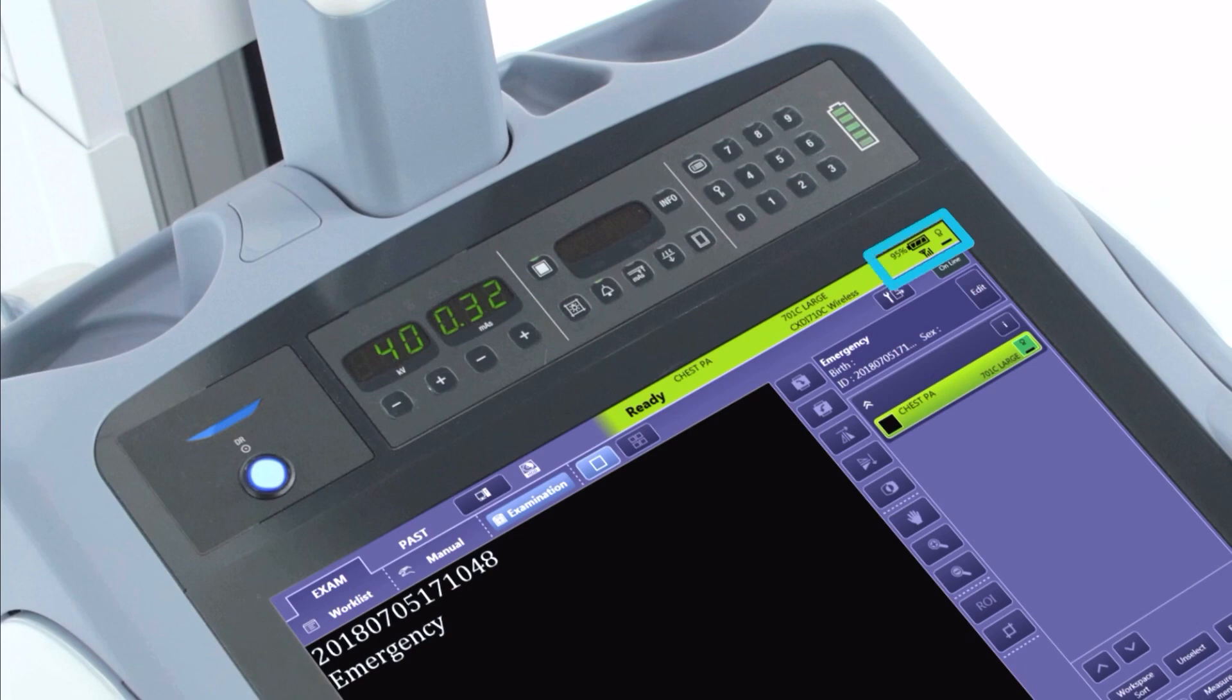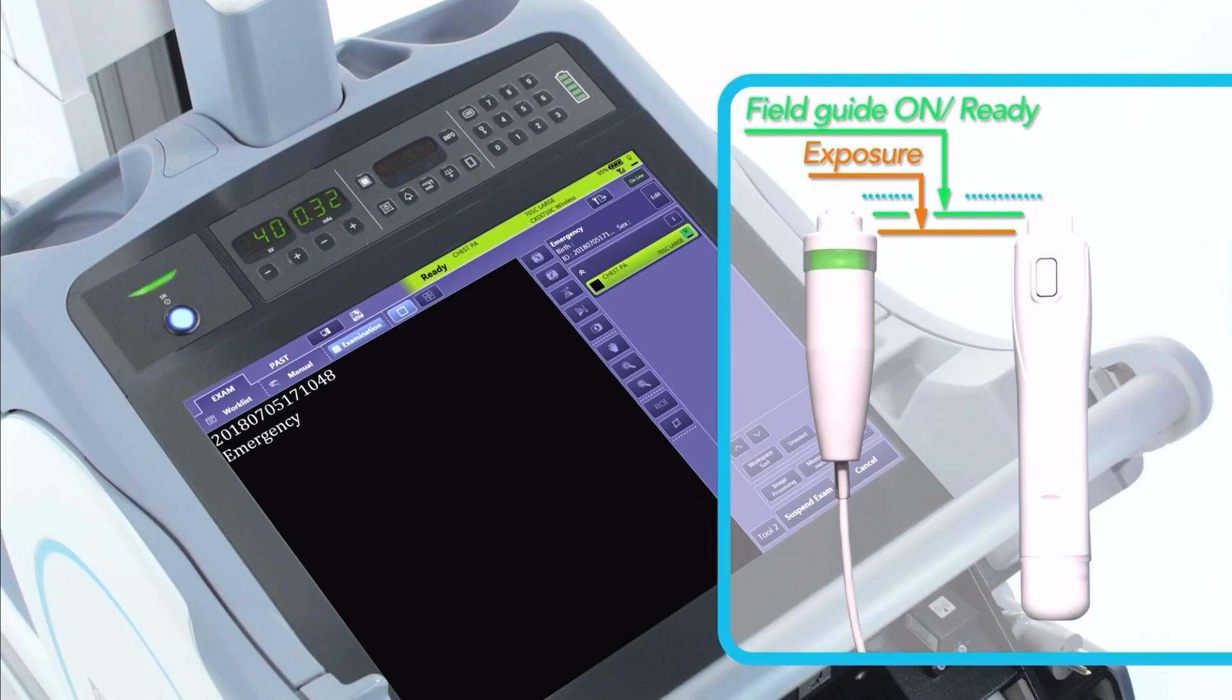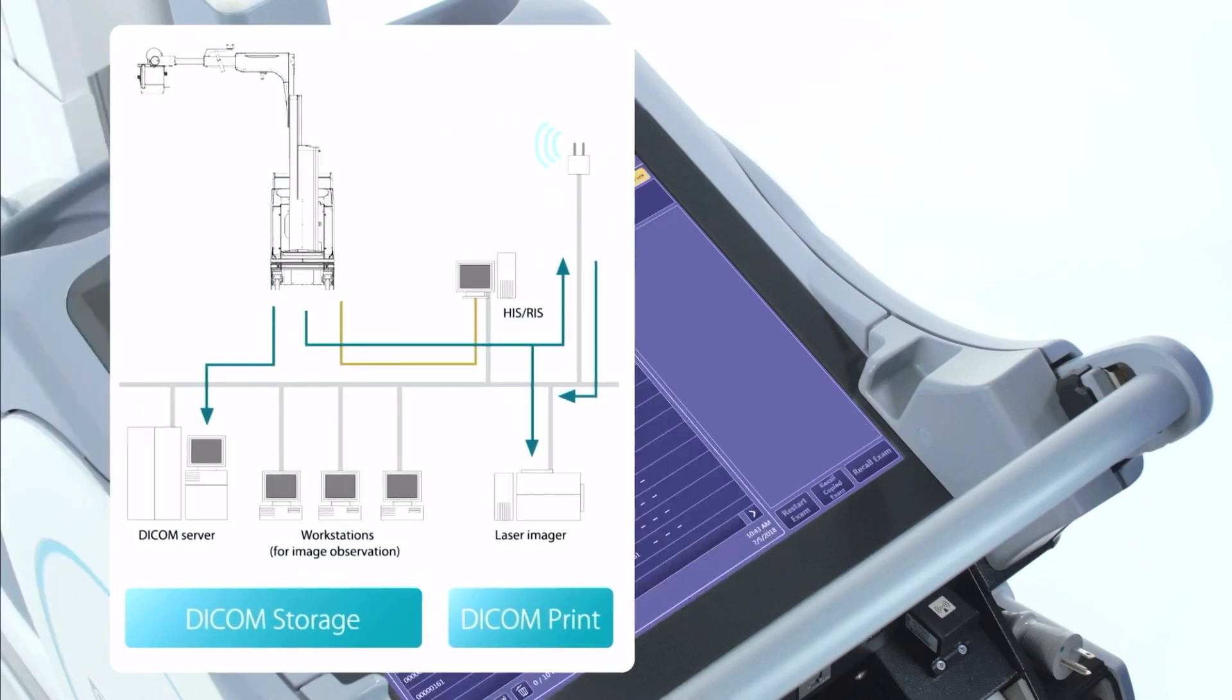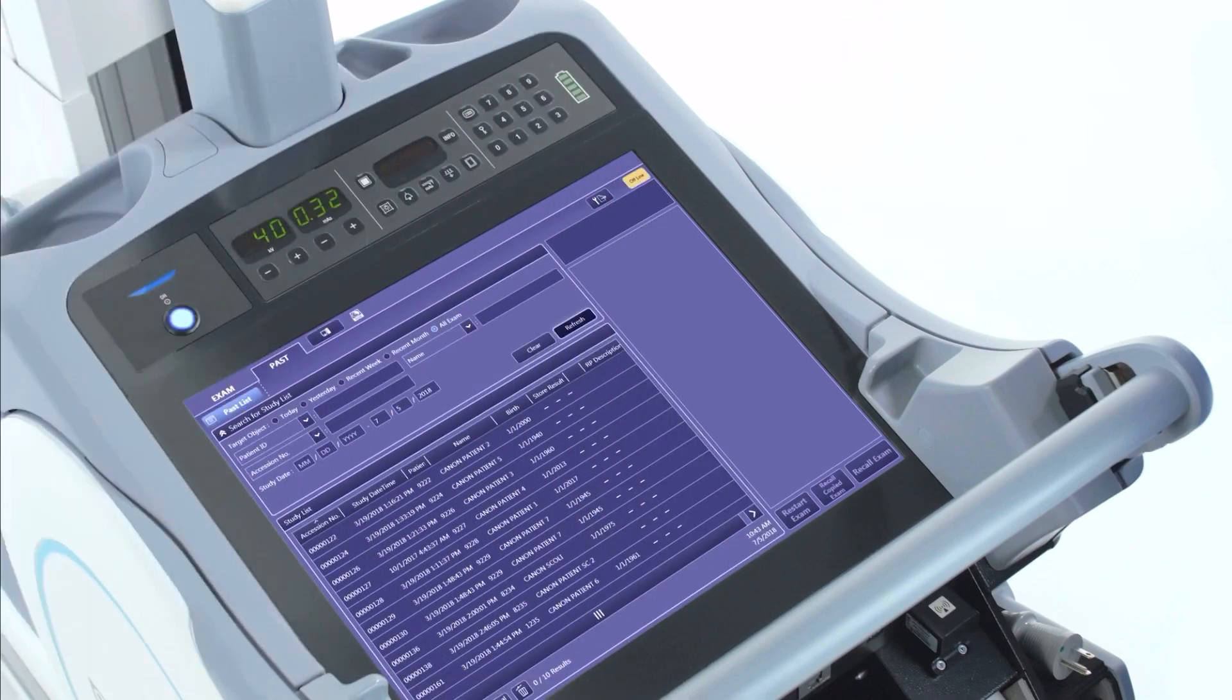On the top of the digital screen, you can find an indicator for the signal strength between the panel and the unit. A green indicator lets you know that the system is ready to make an exposure. Activate the exposure using the hand switch. Once you've made your exposure, you can send out the image wirelessly and then return to the main work screen to select your next patient.